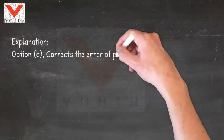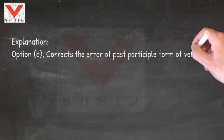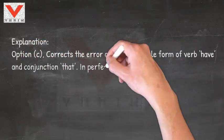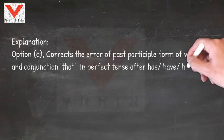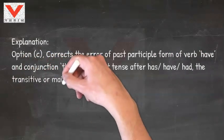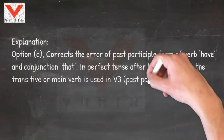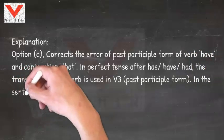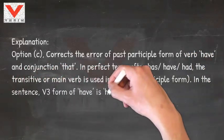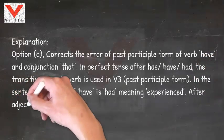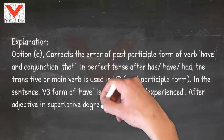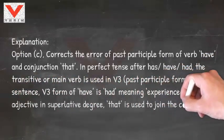Explanation: Option C corrects the error of past participle form of verb 'have' and conjunction 'that'. In perfect tense after has/have/had, the transitive or main verb is used in V3 (past participle form). In the sentence, V3 form of 'have' is 'had' meaning experienced. After adjective in superlative degree, 'that' is used to join the clauses.